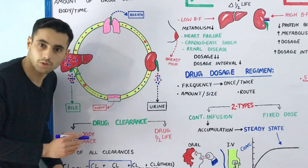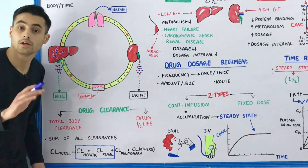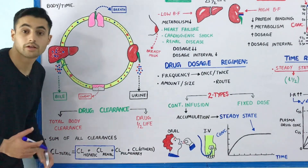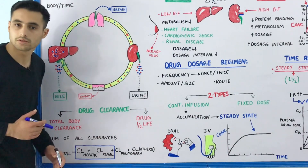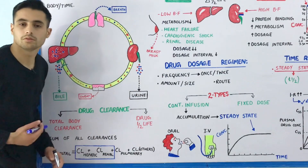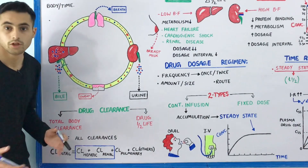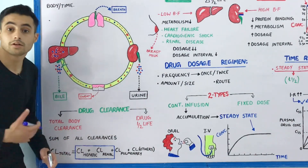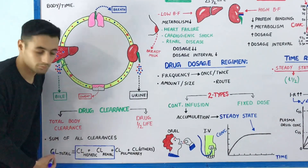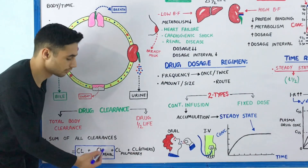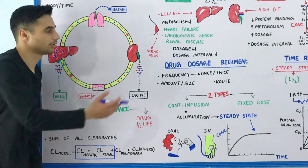Drug clearance depends upon two factors: total body clearance and the drug half-life. Total body clearance, as the name suggests, is the sum of all the clearances from the organs — for example, your lungs (pulmonary clearance), your kidneys (renal clearance), your liver (hepatic clearance). The formula is: total body clearance = hepatic + renal + pulmonary + other clearances such as skin and mammary glands.